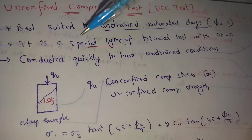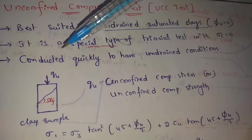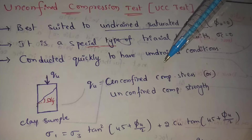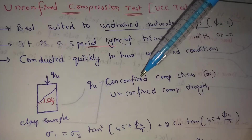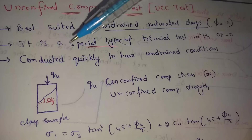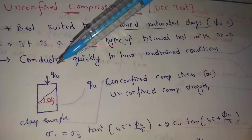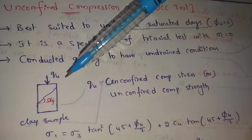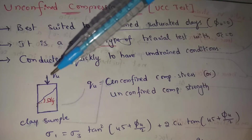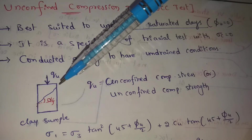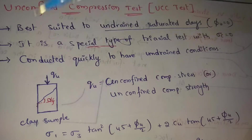For example, for a clay sample, we apply some load q, where q means Unconfined Compression Stress or Unconfined Compression Strength. As we apply this load, the soil sample develops a crack and a shearing plane at an angle. This failure angle is called alpha f.